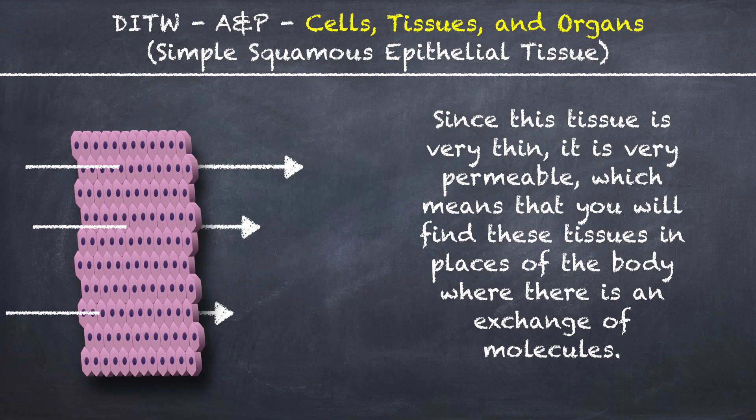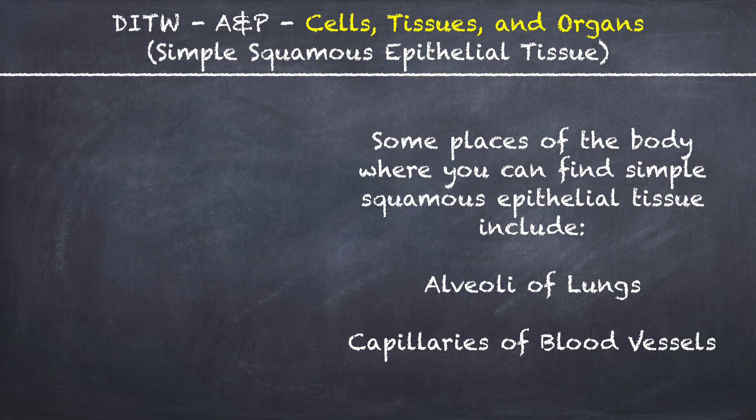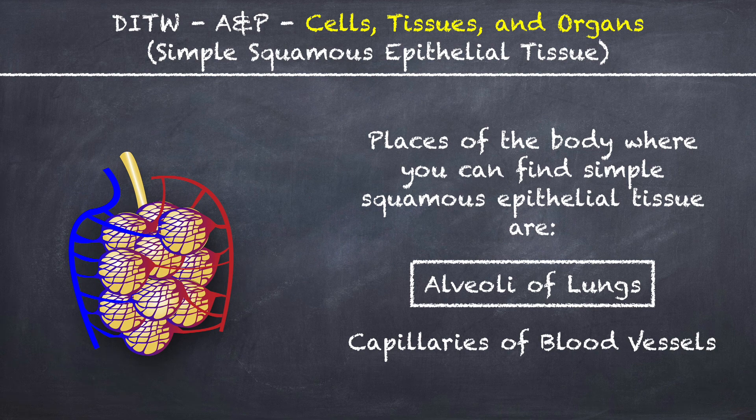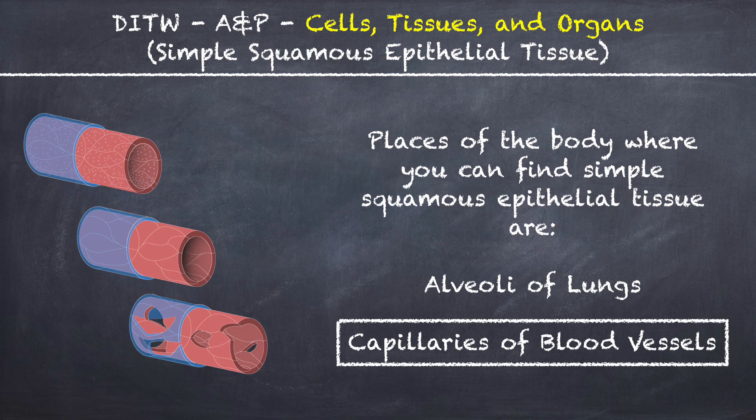Since this tissue is very thin, it is very permeable, which means that you will find these tissues in places of the body where there is an exchange of molecules. Some places of the body where you can find Simple Squamous Epithelial Tissue include the alveoli of the lungs and the capillaries of blood vessels.